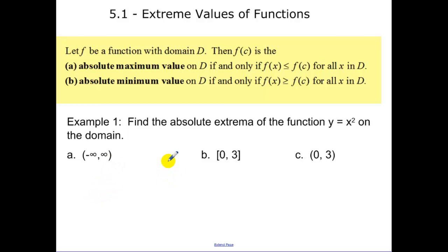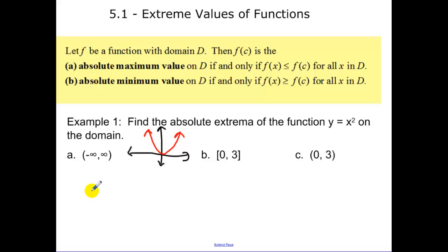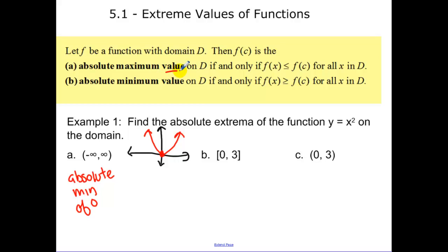Find the absolute extrema of the function y equals x squared on the domain. y equals x squared is a parabola — I expect you to know what that function looks like. Looking at that from negative infinity to infinity, for all x values, we only have an absolute minimum of zero. Remember, value means the y value.